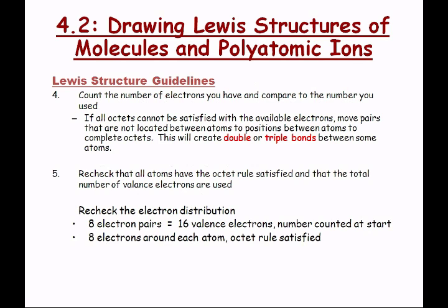When you've got different atoms that can make multiple bonds and no halogens or hydrogens in the compound — or in this polyatomic ion — we're not certain which is the central atom. The rule is to put your least electronegative atom in the center. Carbon is less electronegative than oxygen, so we're going to put carbon first. Draw the valence electrons around carbon — it has four: one, two, three, four.